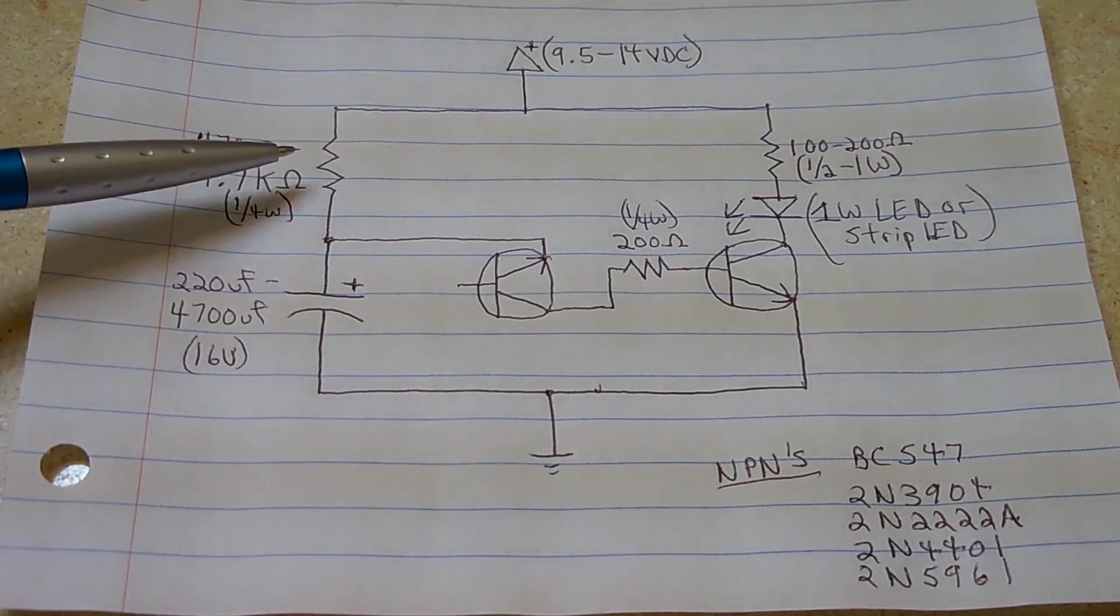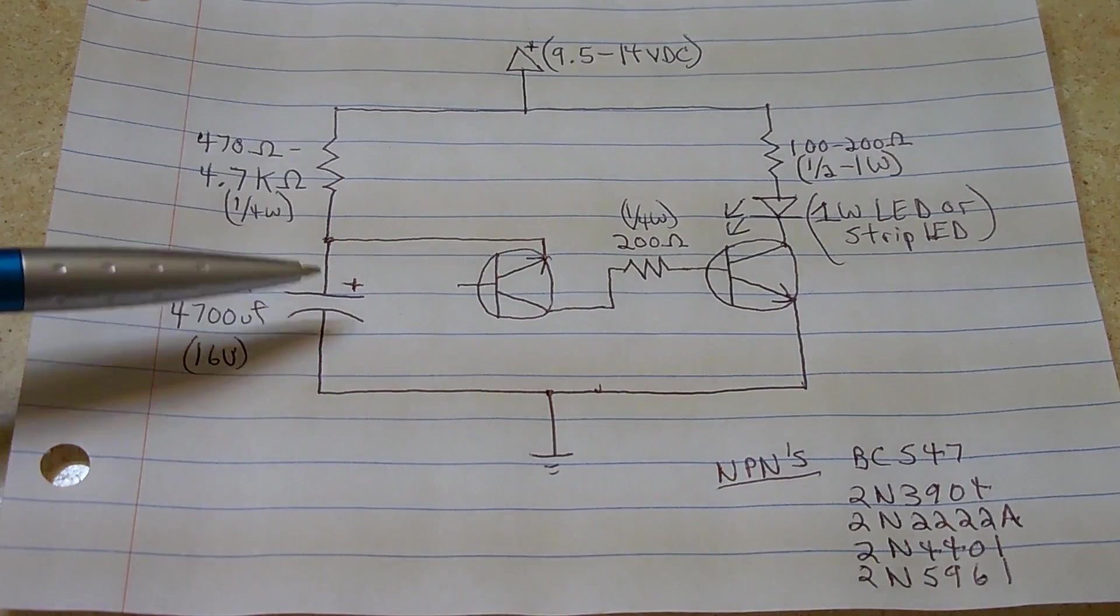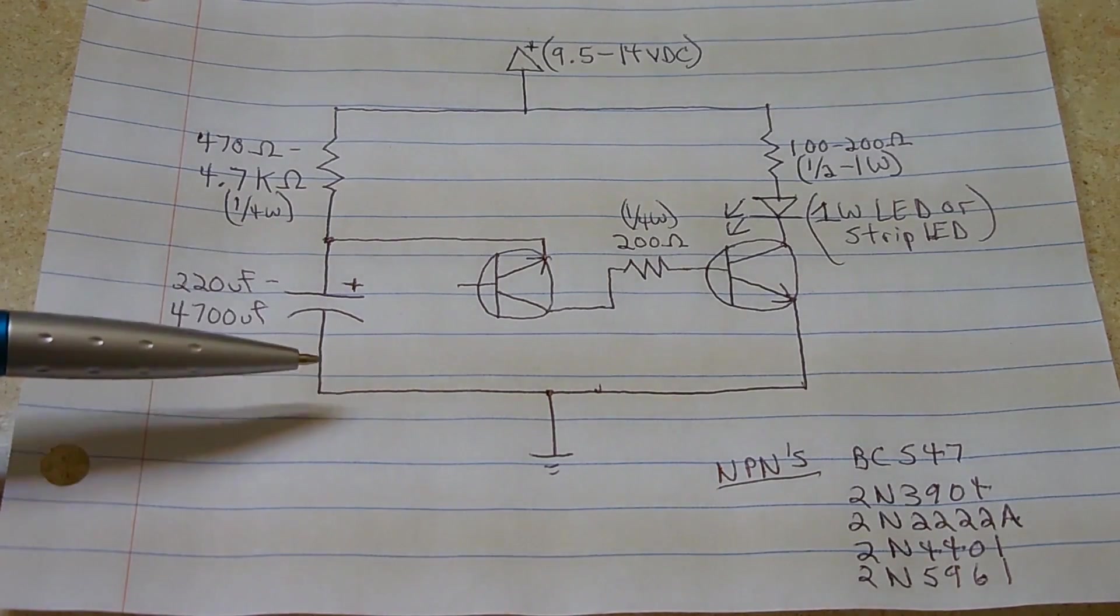If you open the faucet all the way, meaning make this resistor value extremely low, or eliminate it altogether, the capacitor will charge up very quickly, just like the cup of water would fill up very quickly.